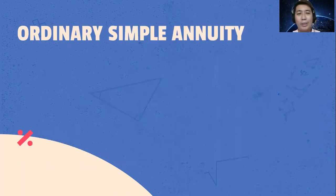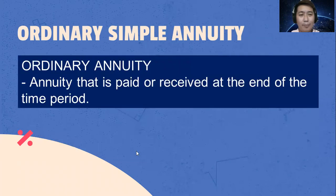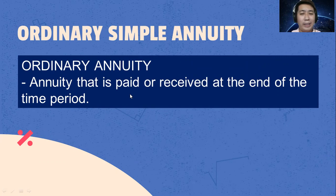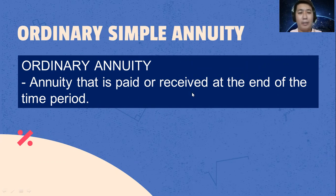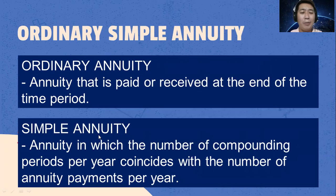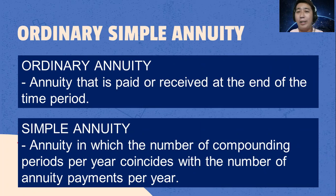What is ordinary simple annuity? Ordinary annuity is the annuity that is paid or received at the end of the time period. While simple annuity is the annuity in which the number of compounding periods per year coincides with the number of annuity payments per year.